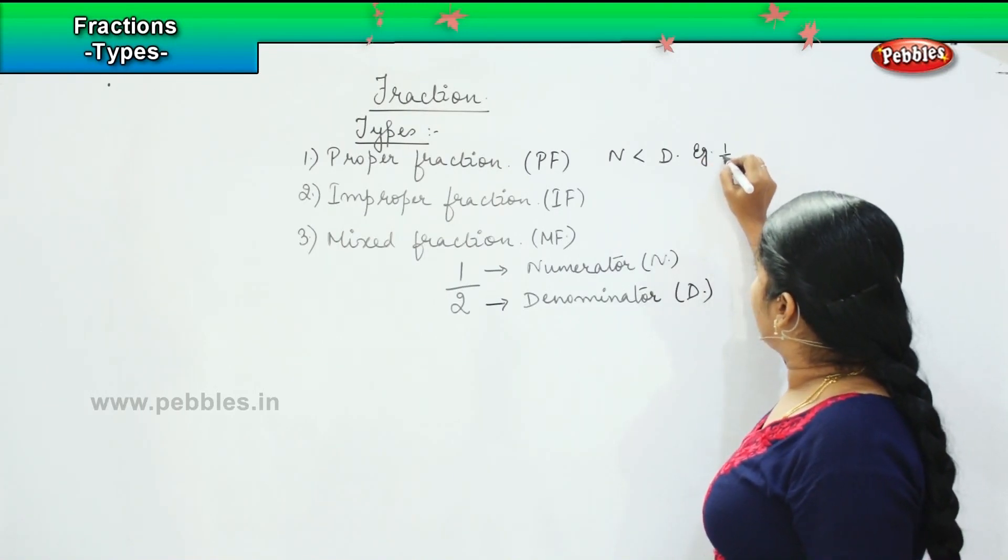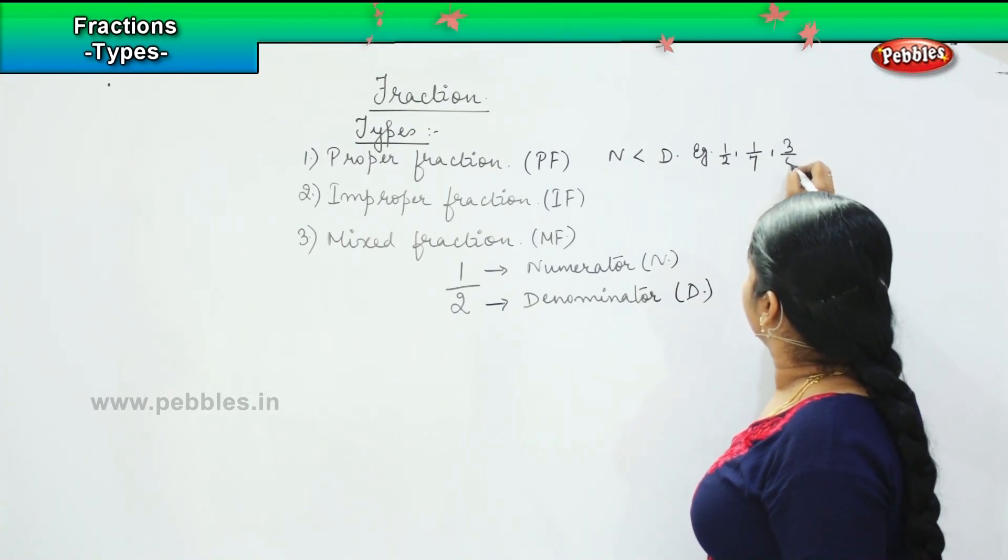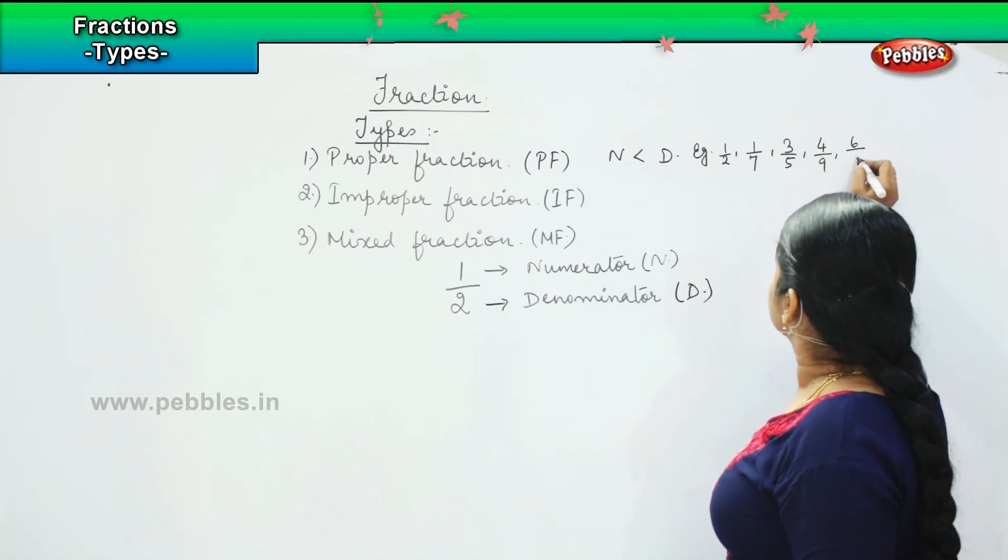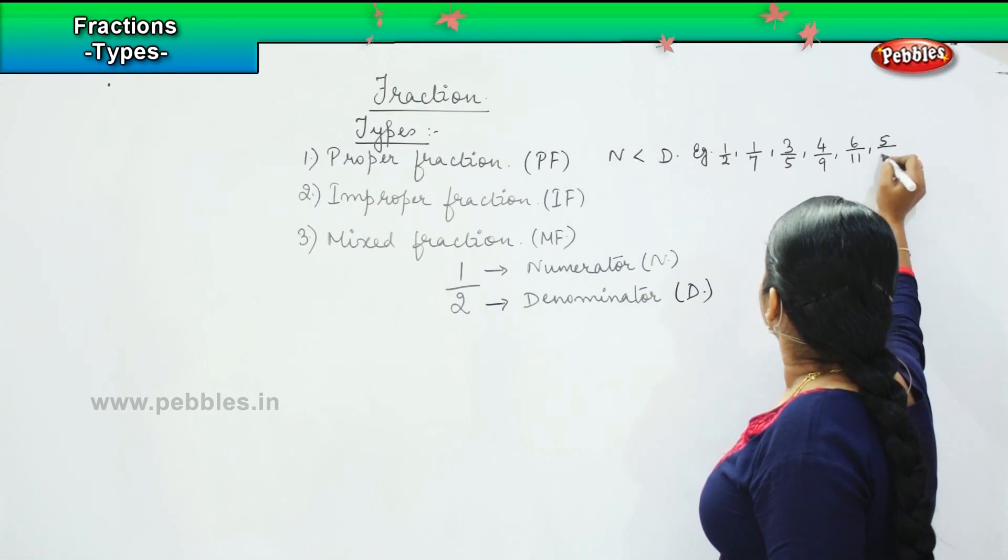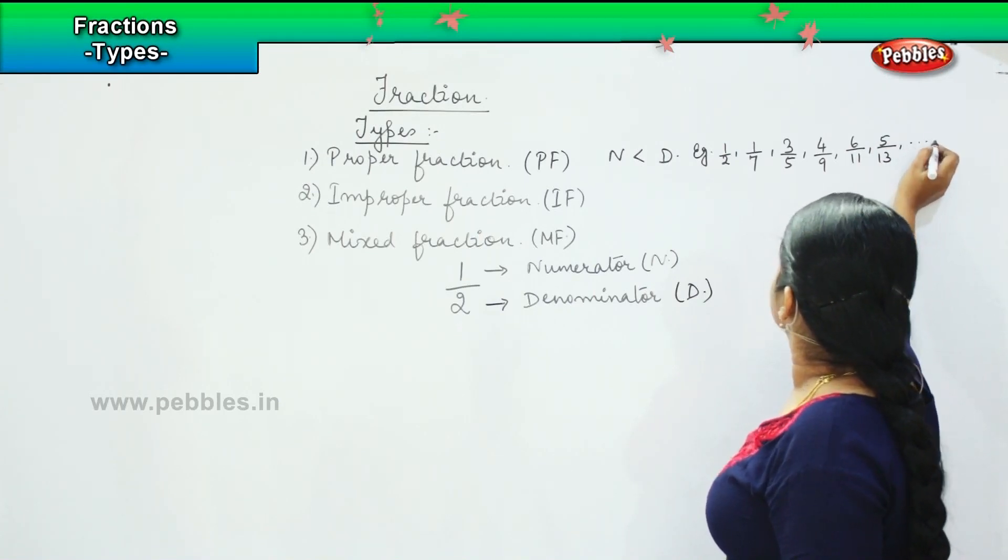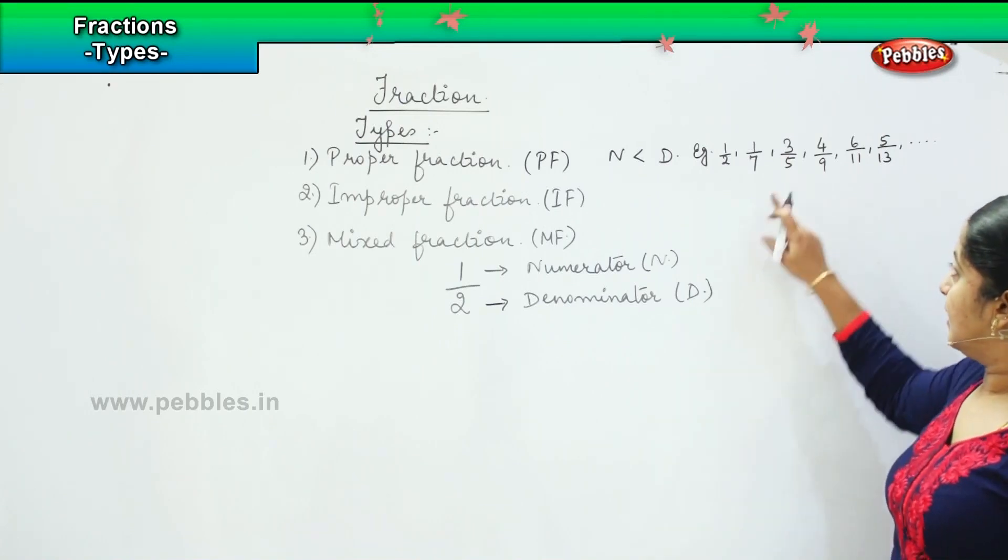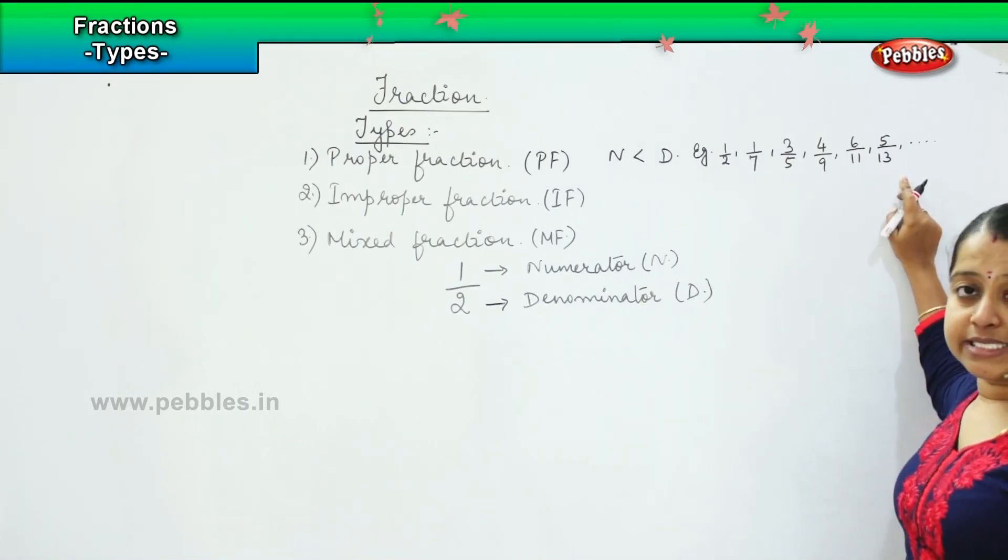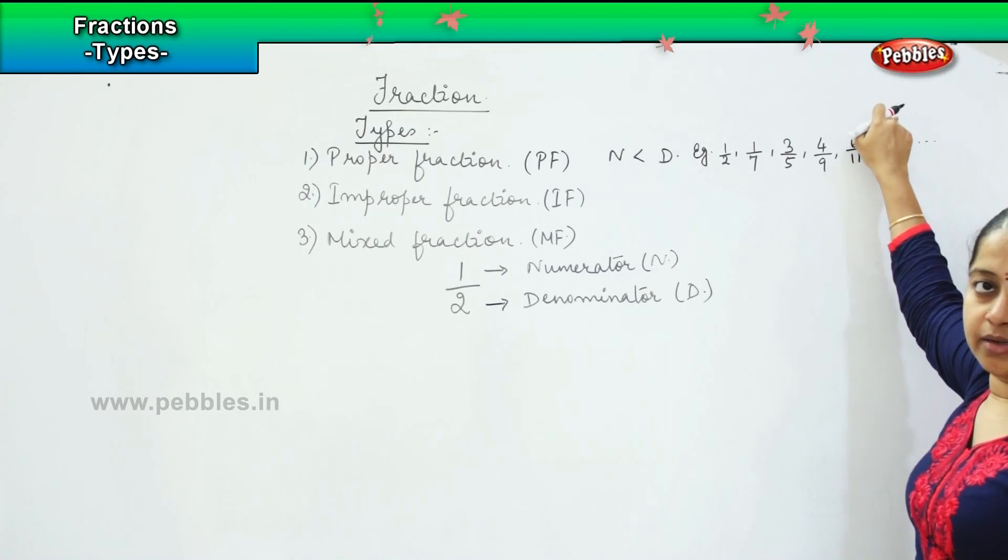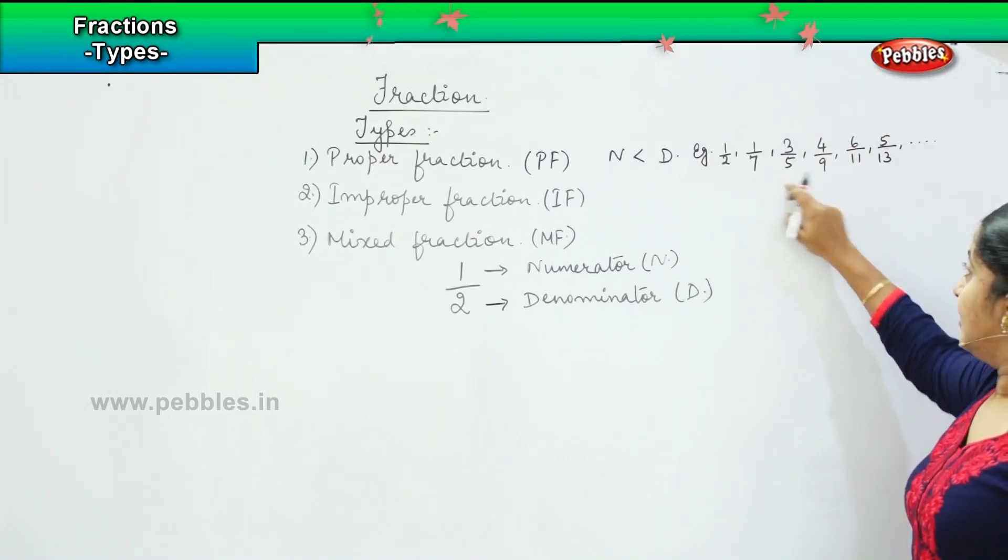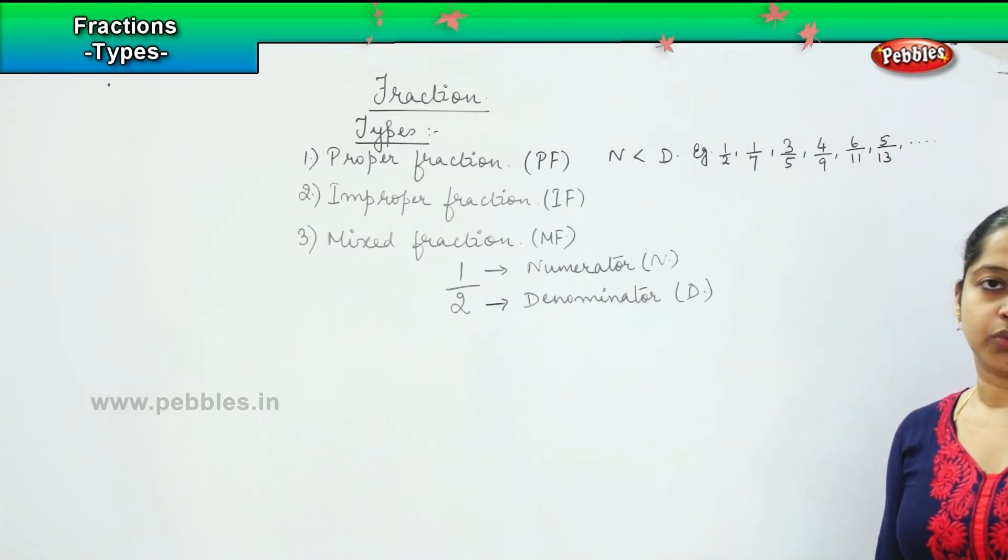I can say 1 by 2, 1 by 7, 3 by 5, 4 by 9, 6 by 11, 5 by 13. In all these cases, you have seen that the denominator is larger than the numerator. The value of numerator is lesser than the denominator value.